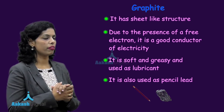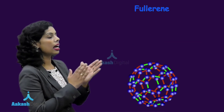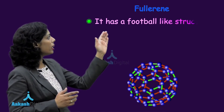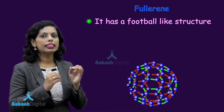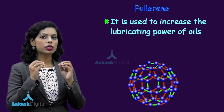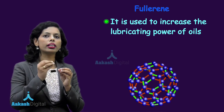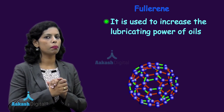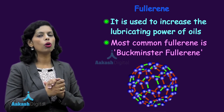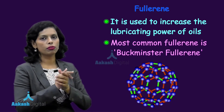Then I have told you about fullerene, which is another allotrope of carbon. Fullerene has certain rings, it has a football-like structure, and this fullerene has the nature to increase the lubricating power of oils. The most common form of fullerene is Buckminster fullerene.